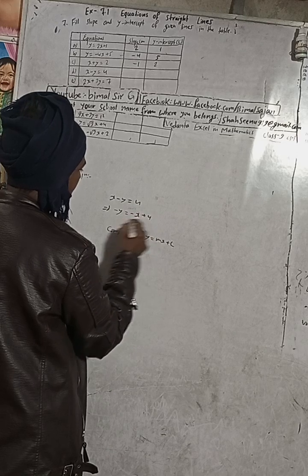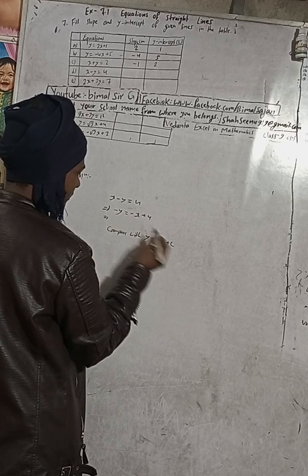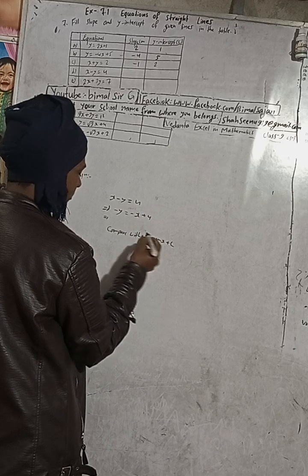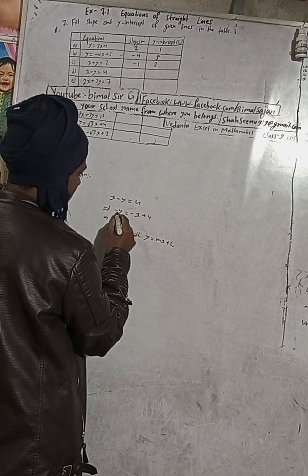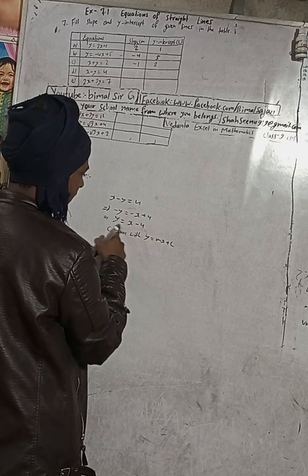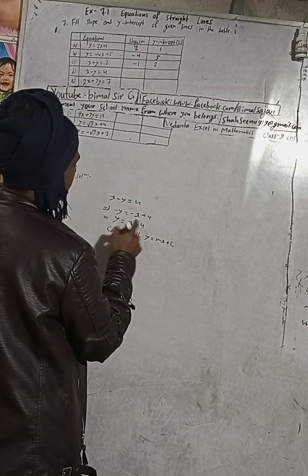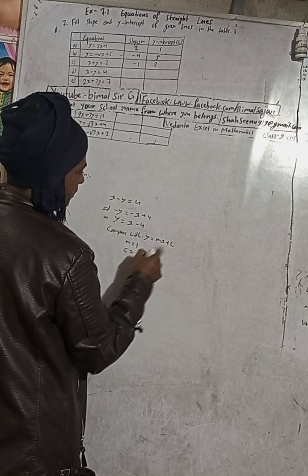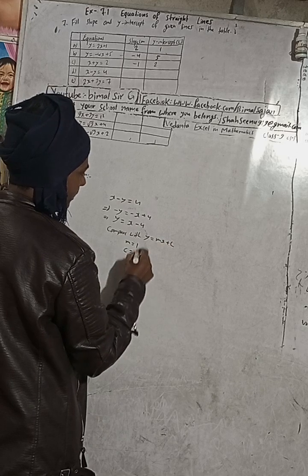To change the sign, multiply both sides by minus. When you multiply both sides by minus, minus becomes plus and plus becomes minus. Comparing with y = mx + c, m = 1 and c = -2.